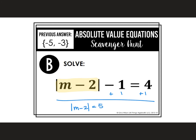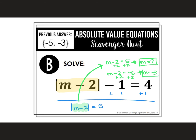That gives me the absolute value of M minus 2 is equal to 5. Now remember, as soon as you have the absolute value as the only thing on the left side, you're ready to think about the two equations. We do have two answers because an absolute value can equal a positive number. So M minus 2 could be 5, or M minus 2 could be negative 5. Adding 2 to both sides gives M equals 7, and for the other equation M equals negative 3. Written as a set, that would be {-3, 7}.